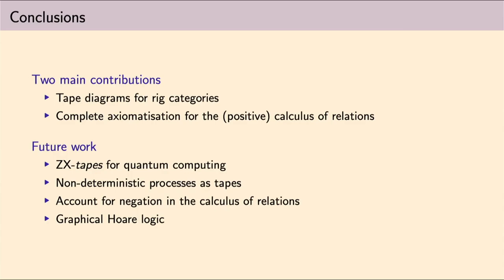Okay we have lots of time for questions so maybe start over here. I guess I think of the defining thing about rig categories as being the distributivity isomorphism. Did you maybe I missed it but did you show what that looks like in your diagrams?